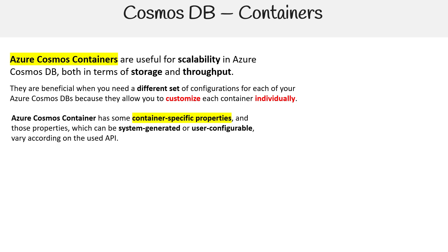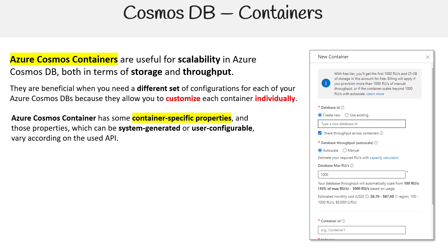Azure Cosmos containers have some container-specific properties. Those properties, which can be system-generated or user-configurable, vary according to the used API. When you first create a database, you actually have to create a container with it. We'll create a new one, and there are a bunch of options here — that's what we're going to be talking about: all the options around containers.